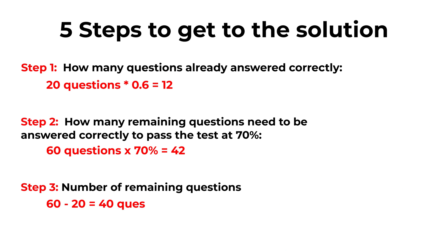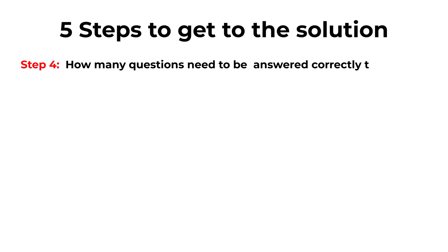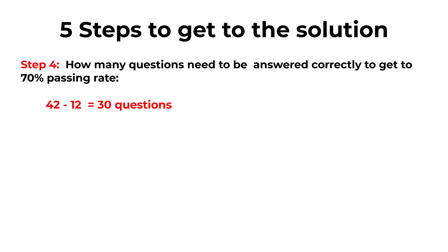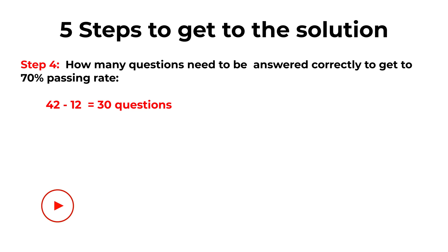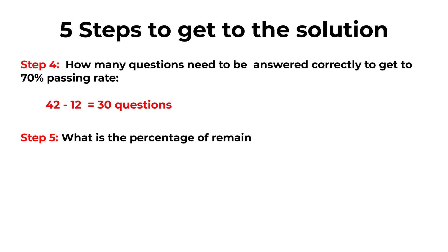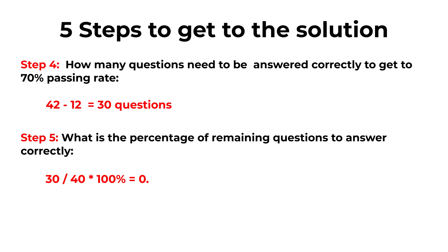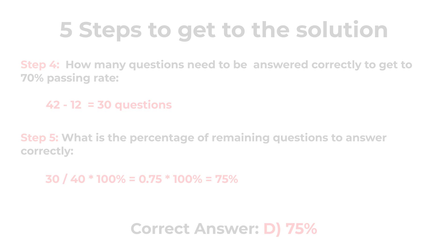Now, how many of the remaining questions need to be answered correctly? We subtract 12 (already answered correctly) from 42 (total needed): 42 − 12 = 30. So out of the remaining 40 questions, 30 must be answered correctly. The final calculation: 30 ÷ 40 × 100% = 0.75 × 100% = 75%. The correct answer is choice D: 75%.